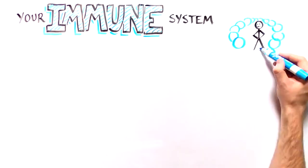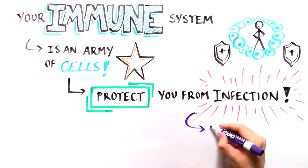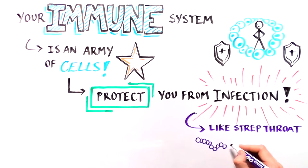Your immune system is made up of an army of cells that protect you from infections, like the virus that causes the common cold or the bacteria that cause strep throat.